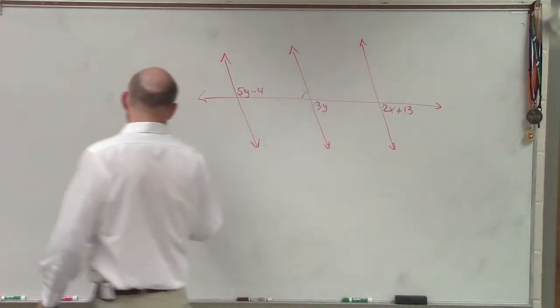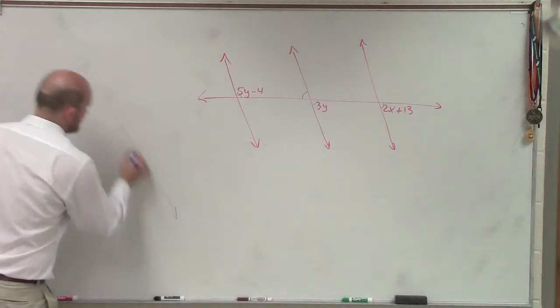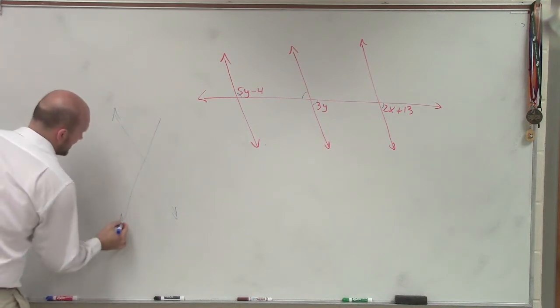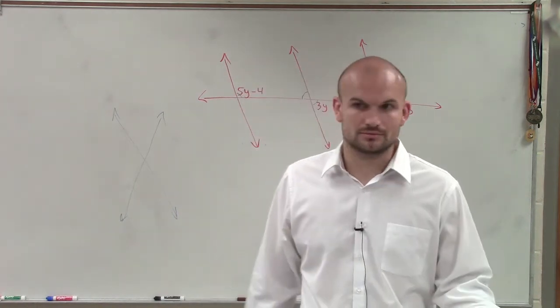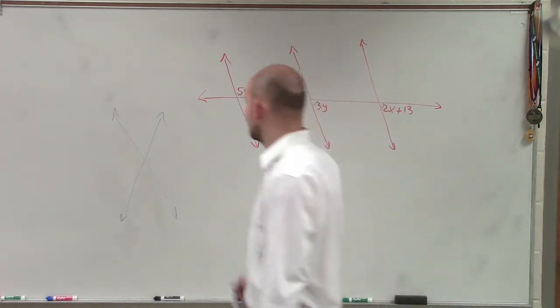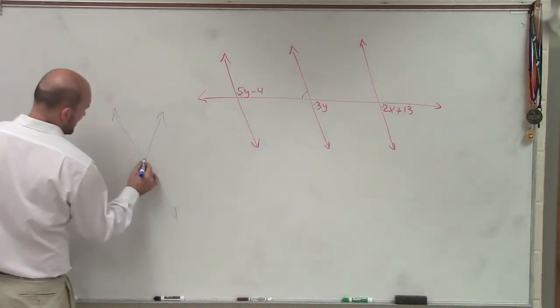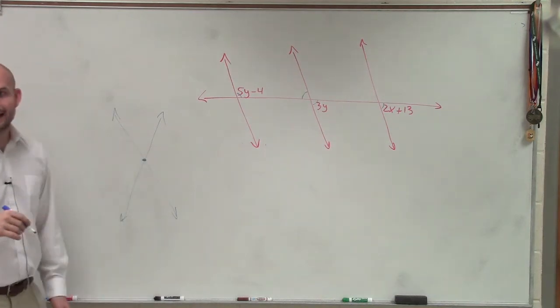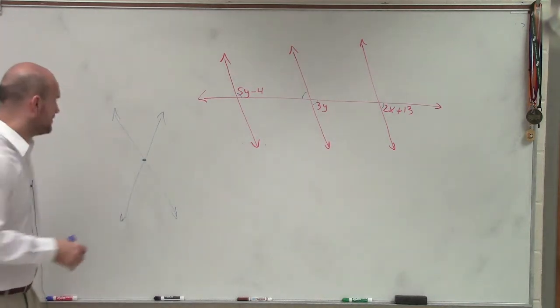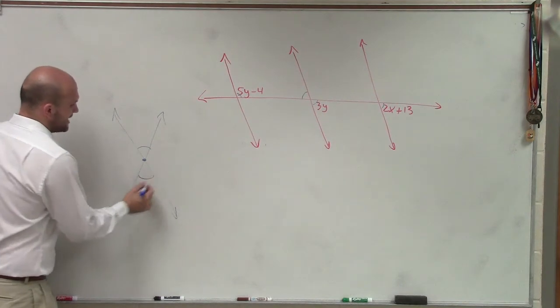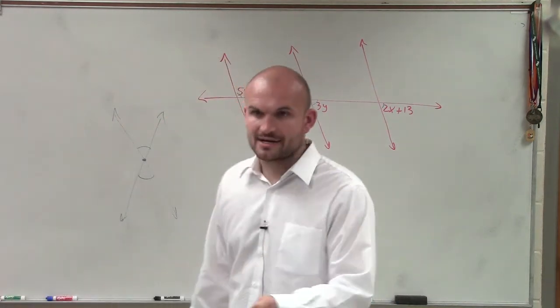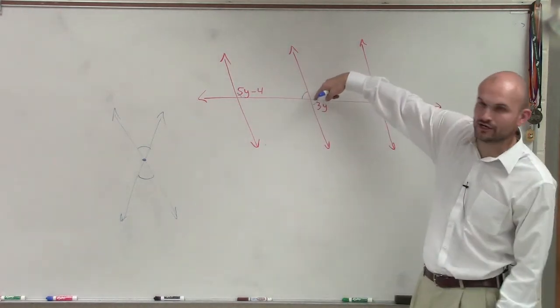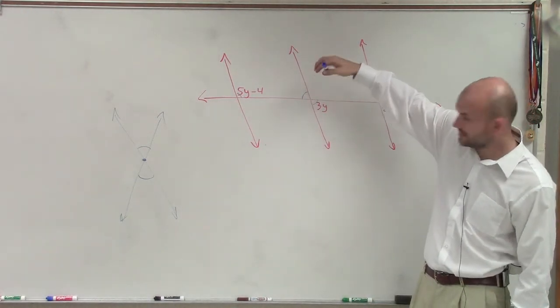Guys, when you have a line intersected by another line, what type of angles do you create? Does anybody remember them? They rhyme with tertical. Vertical angles, right? Vertical angles happen when you have an angle, or a line intersected by another line. Then the angles share a vertex, but do not share a side. Right here, do we have a line intersecting another line? Yes.